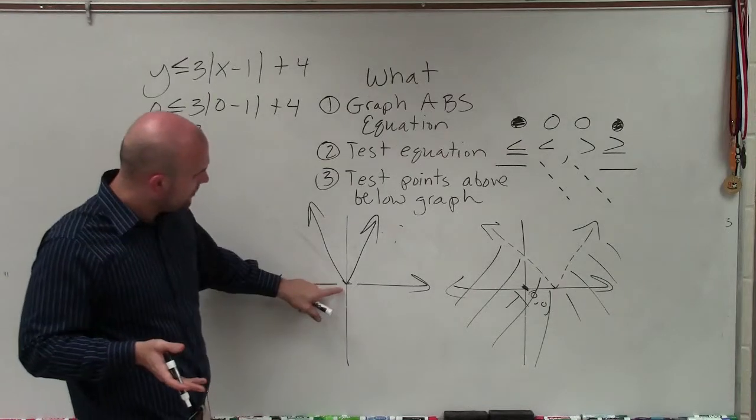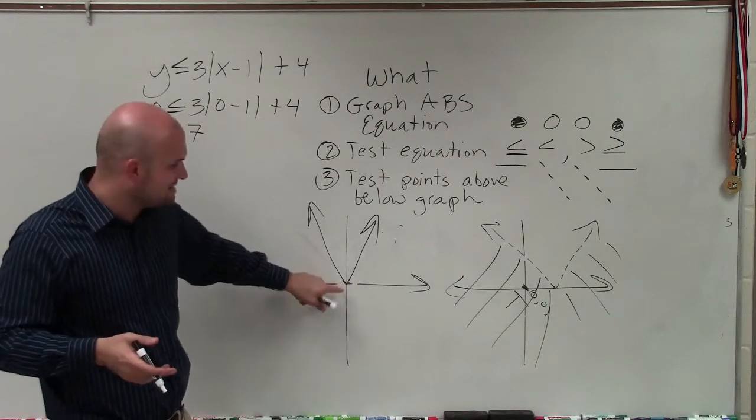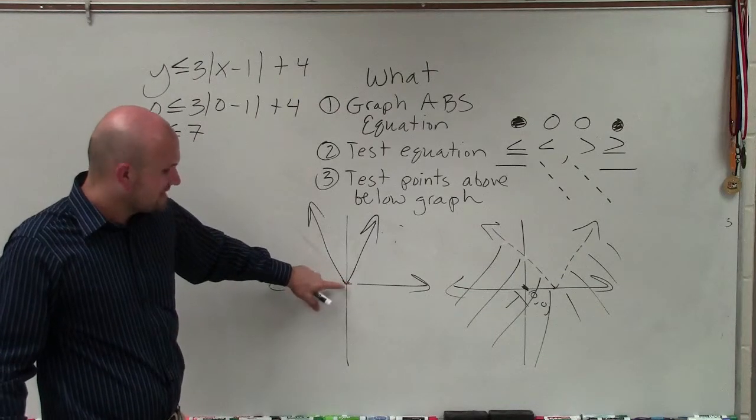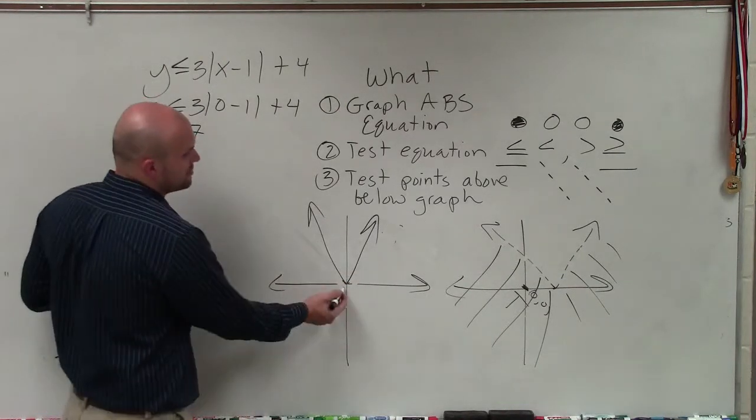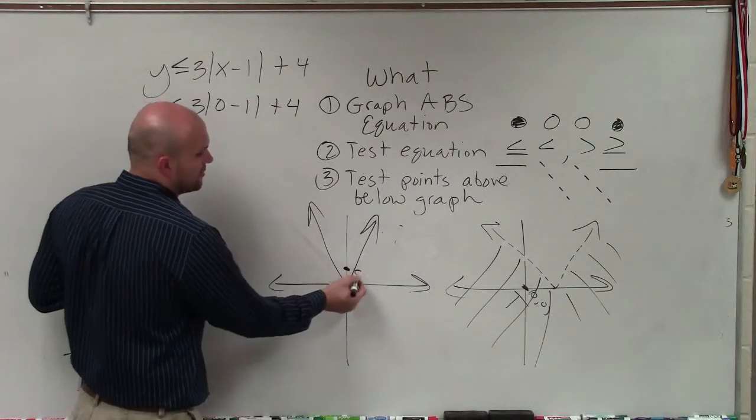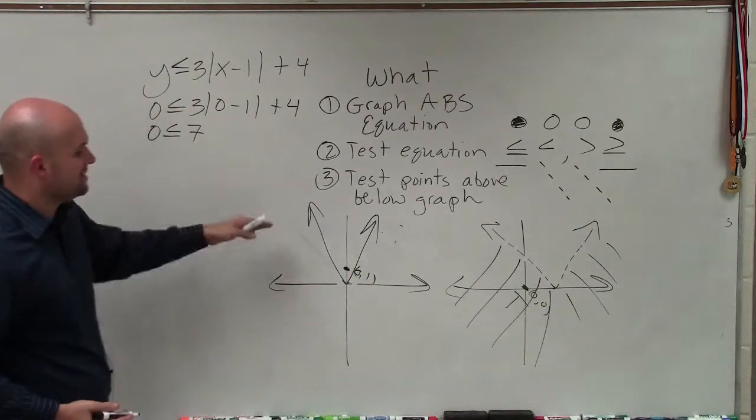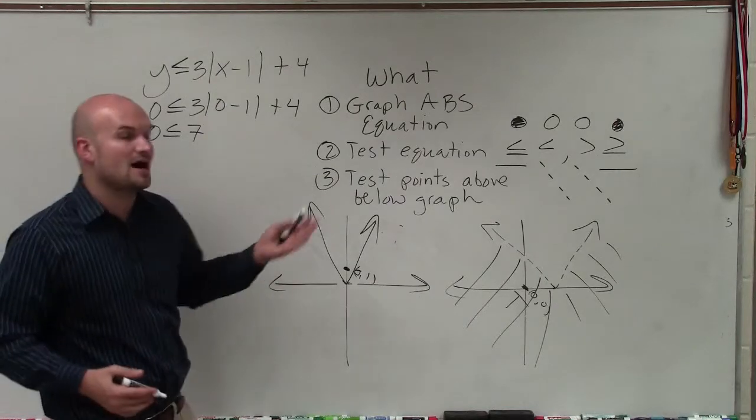Sometimes the problem comes in when we have a graph that passes through (0,0). Now we don't want to test it because then we're testing the line and not the region. So we want to choose another point, like (0,1), because that is not on the line. Then you plug in zero for x and one for y.